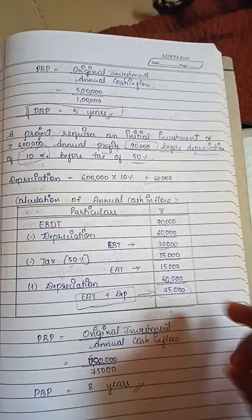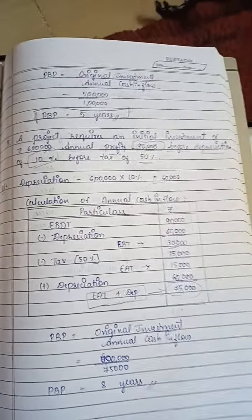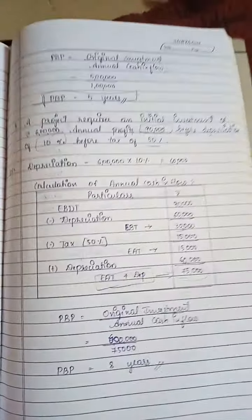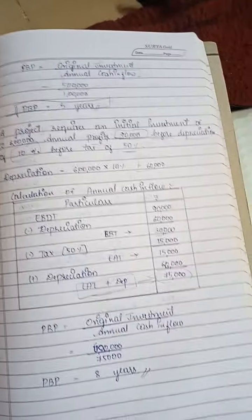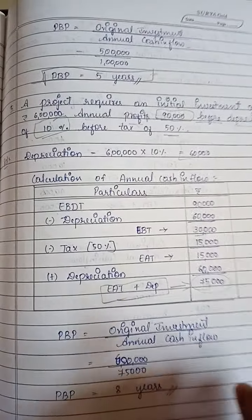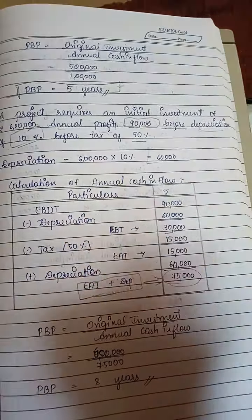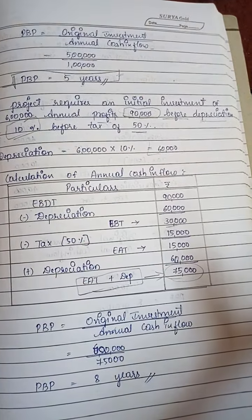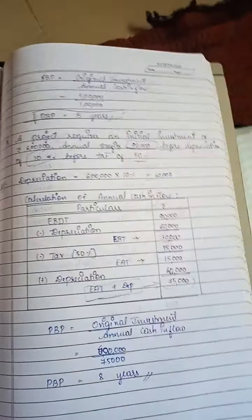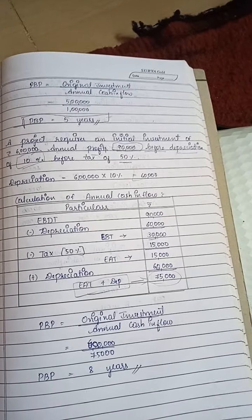Understood? You should understand this format clearly. In this chapter, problems become very easy provided you understand this format. Whether they give you EBT, EAT, before depreciation before tax, or before depreciation after tax — you need to analyze what steps to follow. You must observe this carefully.